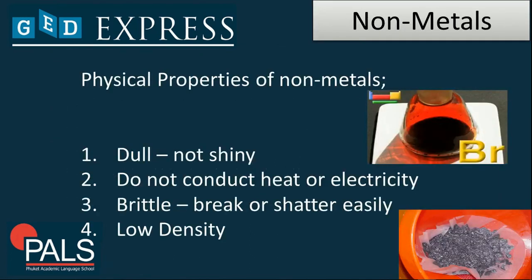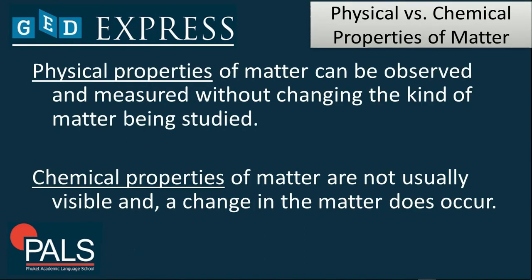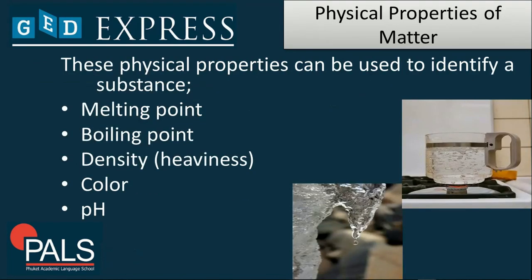Nonmetals are dull, meaning not shiny, and they do not conduct heat or electricity. They are brittle, meaning they break or shatter easily, and they have a low density. When comparing physical versus chemical properties of matter, physical properties are those that can be observed and measured without changing the kind of matter being studied. Physical properties used to identify a substance include melting point, boiling point, density, color, and the power of hydrogen — or pH — which indicates the acidity and basicity of a substance.